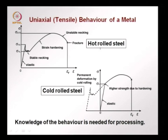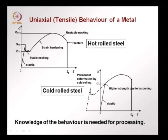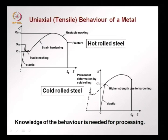The tensile behaviour is also used to determine how a material should be processed. In the case of hot roll steel, we have elastic behaviour followed by the onset of yielding, the upper yield limit, then the lower yield limit, stable necking, strain hardening, a peak, and then complete rupture occurring at a strain which can be called epsilon f for failure.